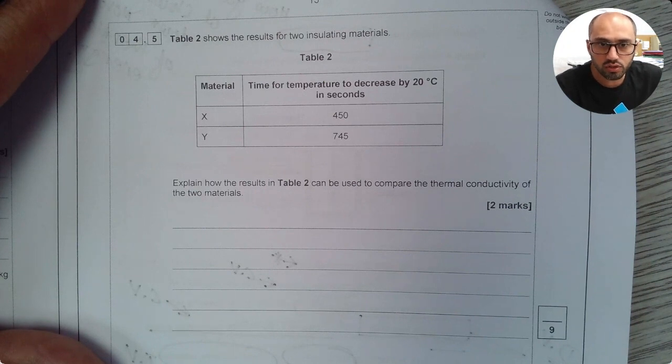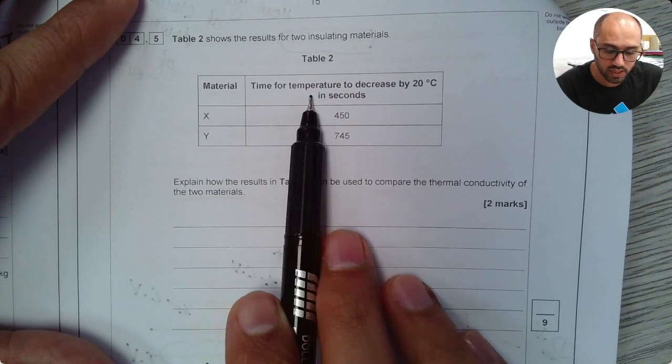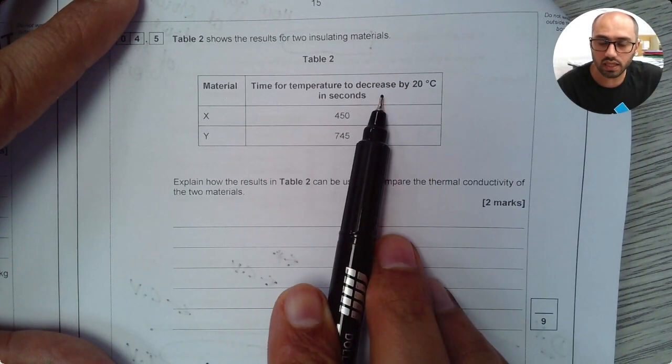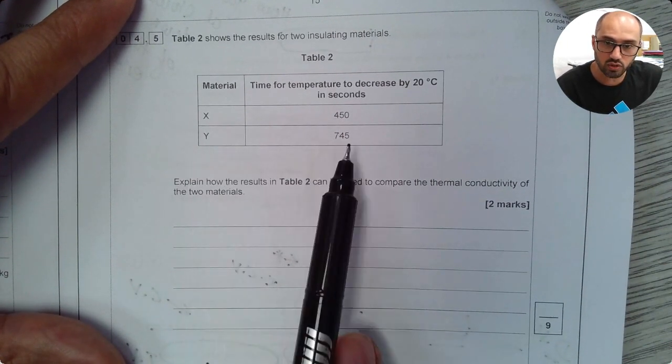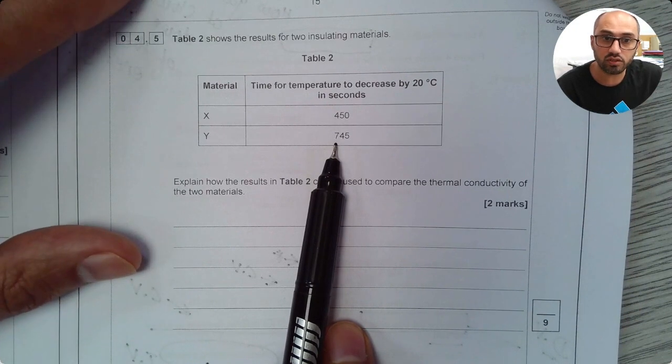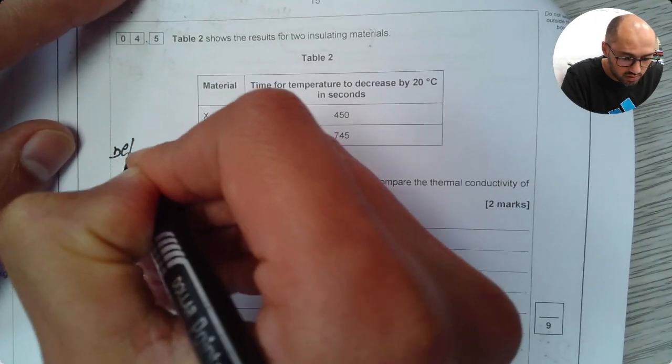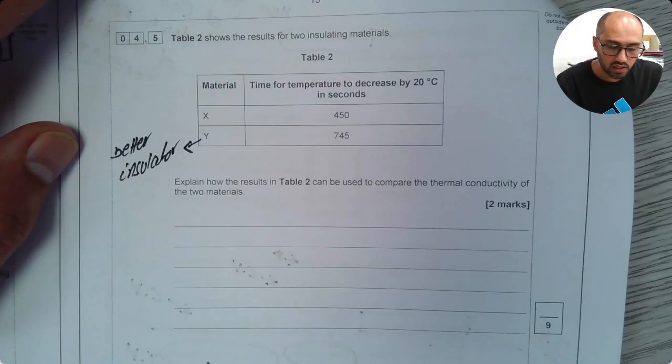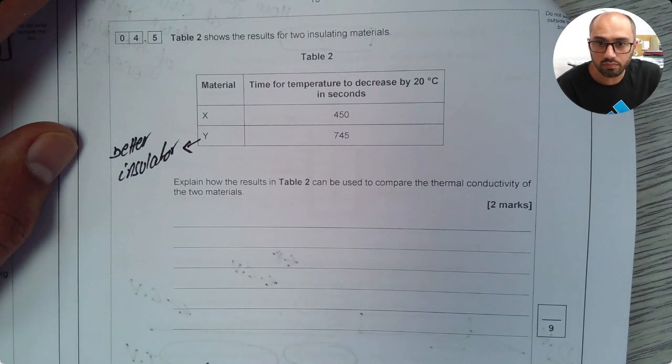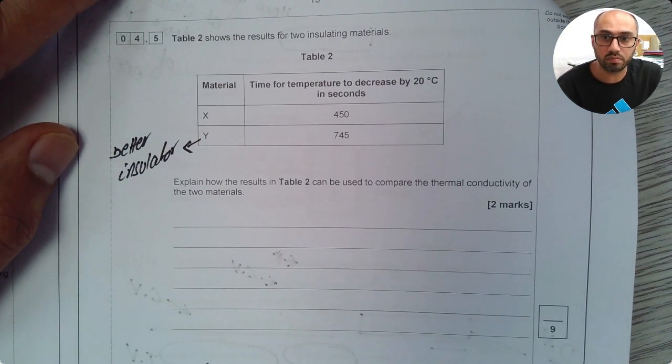Next part says Table 2 shows the results for two insulating materials. So material X and material Y. Time for temperature to decrease by 20 degrees Celsius in seconds. So the first one only took 450 but Y took 745 seconds. So this means Y is better insulating. Here it says explain how the results in Table 2 can be used to compare the thermal conductivity of two materials.